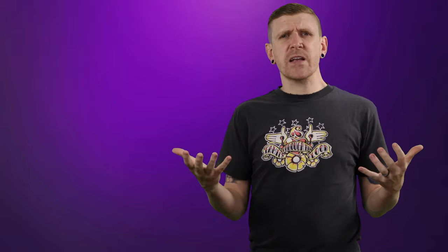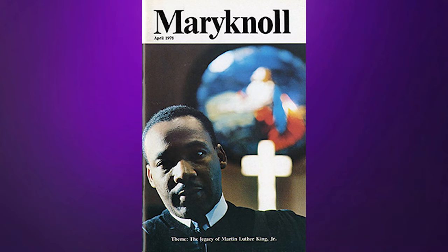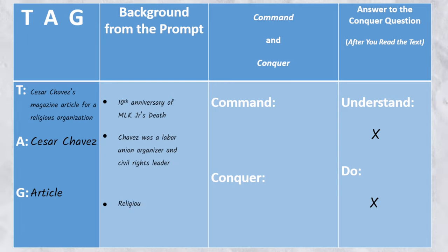Now we move to the second column, where we search for important background information. We're going to identify elements of the rhetorical situation that may show up in the prompt. Here we want to mark things like: the article was published on the 10th anniversary of Martin Luther King Jr.'s death; Cesar Chavez was a labor union organizer and a civil rights leader; and the magazine was for a religious organization dedicated to helping those in need. Don't think the prompt will necessarily tell you the purpose, though sometimes that information does show up. All of this will allow us to begin making inferences that will help us read the essay more effectively.